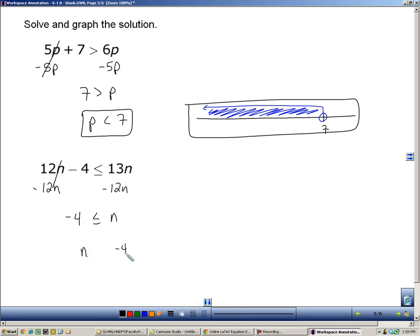So we end up with negative 4 is less than or equal to n. Switching the sides, and then you also have to reverse the symbol there. So n is greater than or equal to negative 4. We'll graph that now. Here's a 0, so call this negative 4. Greater than or equal to, so my circle will be filled in, and my shading to the right to show that I want all the numbers that are bigger than that or greater than that.